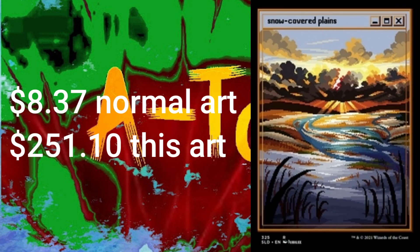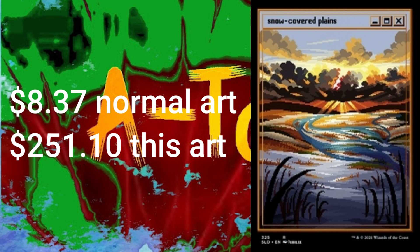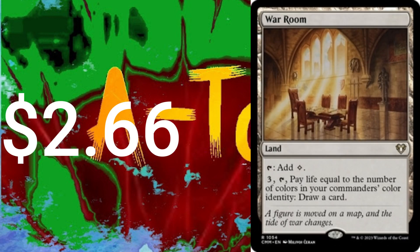Then 31, I repeat, 31 Snow-Covered Plains. They're better than the basic Plains because they're covered in snow. Then finally, where everything will take place, is the War Room.